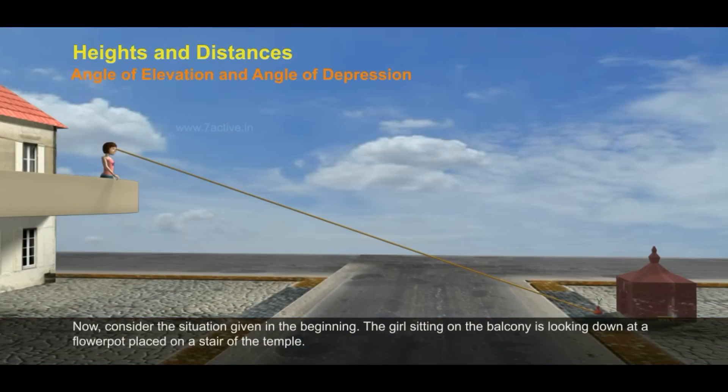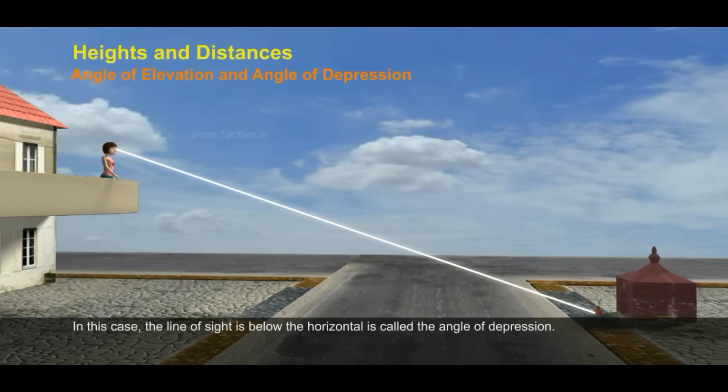Now consider the situation given in the beginning. The girl sitting on the balcony is looking down at a flower pot placed on a stair of the temple. In this case, the line of sight below the horizontal is called the angle of depression.